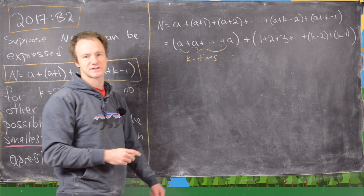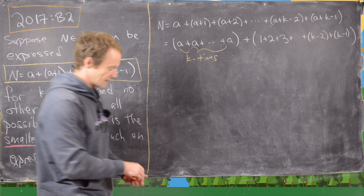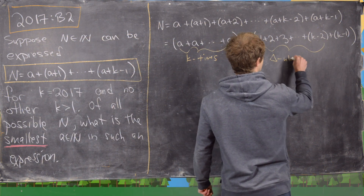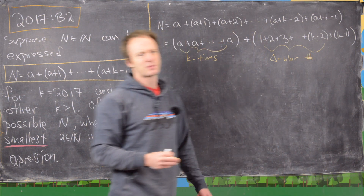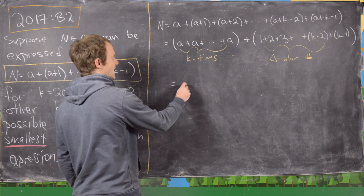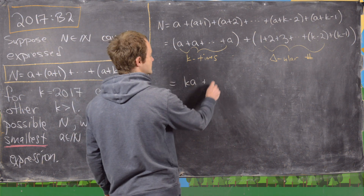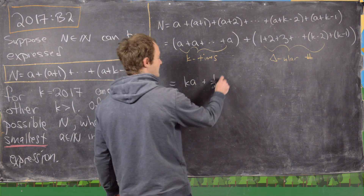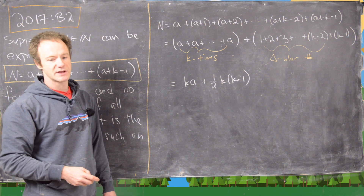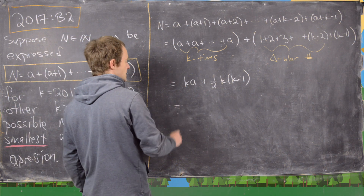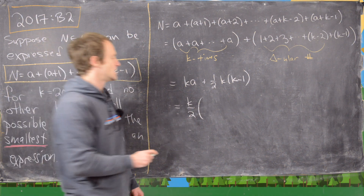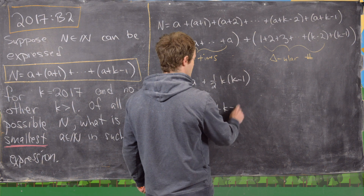That's the sum of the first k-1 natural numbers, which is a triangular number with a known formula. So those a's add up to k times a, and the triangular sum adds up to one-half times k times k-1. Putting this together gives n equals k over 2 times the quantity 2a plus k minus 1.